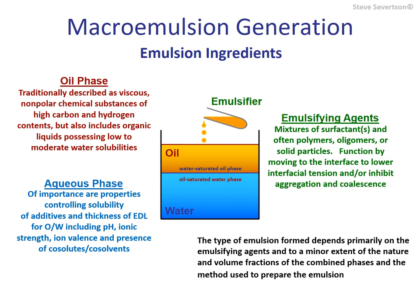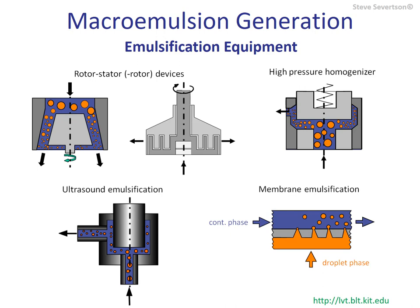Industrially produced emulsions are typically generated via high-energy mechanical means such as shaking, stirring, fluid shear, sonication, membrane metering, and others. Some examples of the equipment used to generate emulsions are shown here. In the laboratory, emulsions are commonly prepared using a sonicator probe for which energy input can be controlled for the generation of colloids from a wide variety of materials.